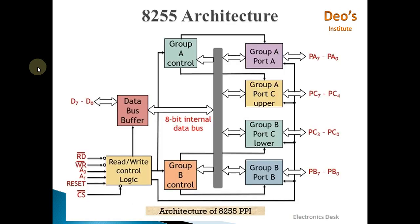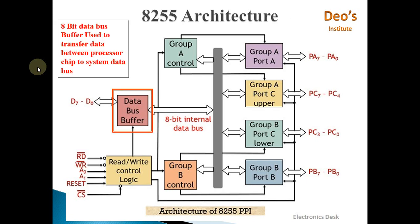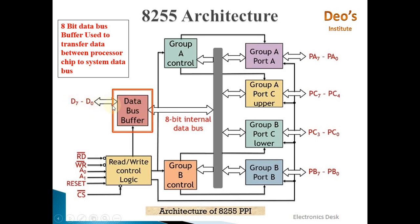This is the detailed architecture of 8255. The first block is the data bus buffer. The data bus buffer connects D0 to D7, which is used to connect to the processor. On one side you have the processor and on the other side you have the peripheral device, and this is the interface between them.